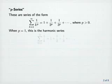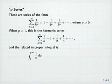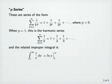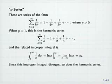When p is 1, this is the harmonic series: the sum from k equals 1 to infinity of 1 over k, equal to 1 plus 1 half plus 1 third, and so on. The related improper integral is the integral from 1 to infinity of 1 over x dx. This equals the natural log of x evaluated from 1 to infinity, which equals the limit as x goes to infinity of the natural log of x minus the natural log of 1, which is 0. And the limit as x goes to infinity of the natural log of x is equal to infinity.